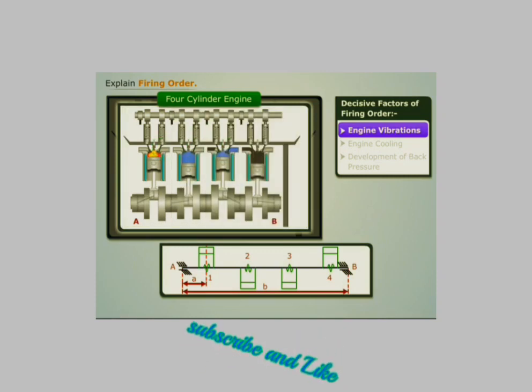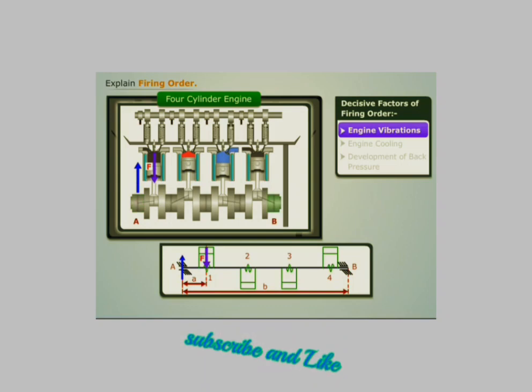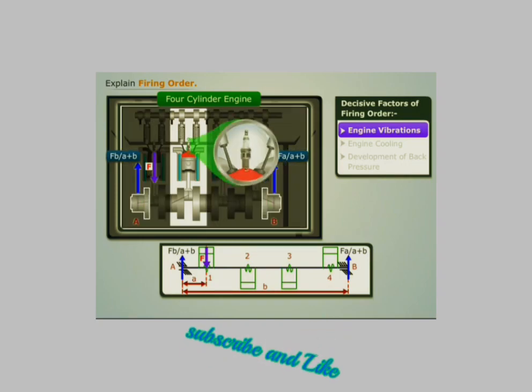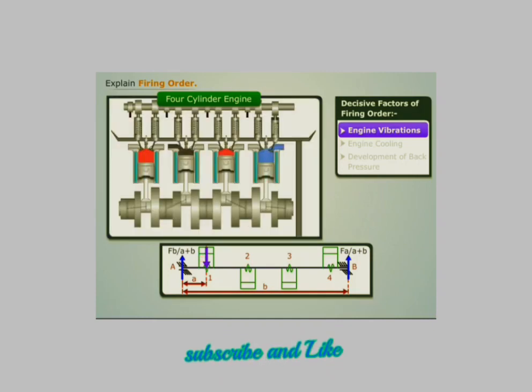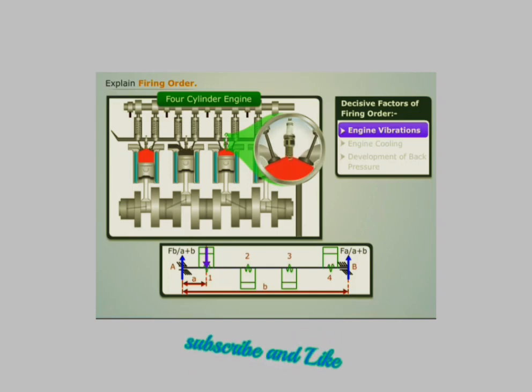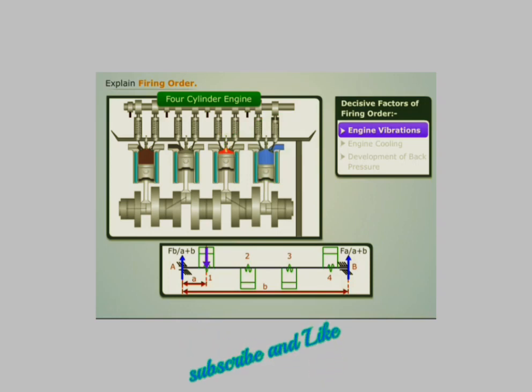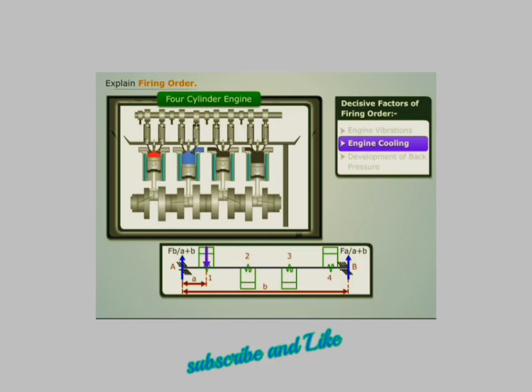Now let's find out the firing order of the four-cylinder engine. Let's consider that the first cylinder is fired. The force F acting downwards on this cylinder gives rise to forces in bearings A and B of magnitude F times B divided by A plus B, and F times A divided by A plus B respectively. Clearly, force in bearing A is greater than the force in bearing B.